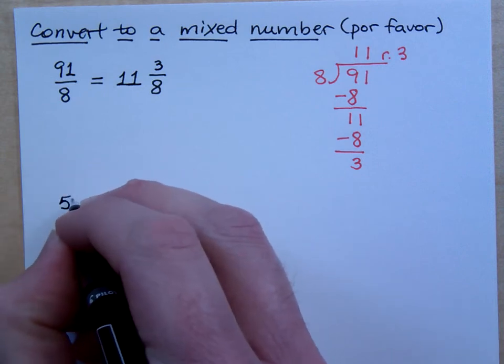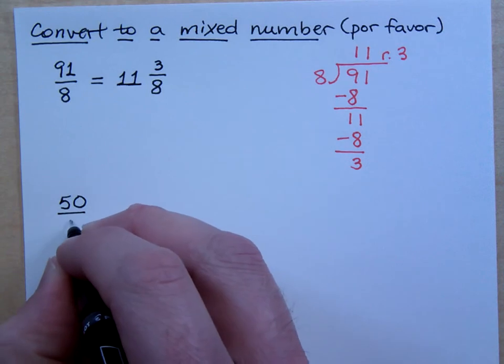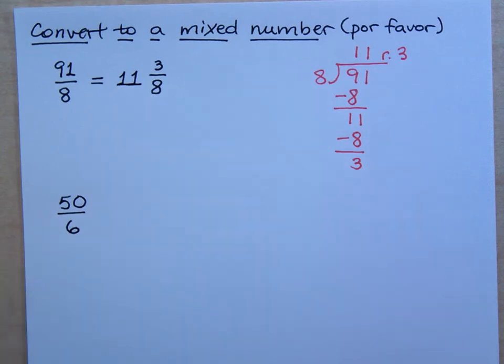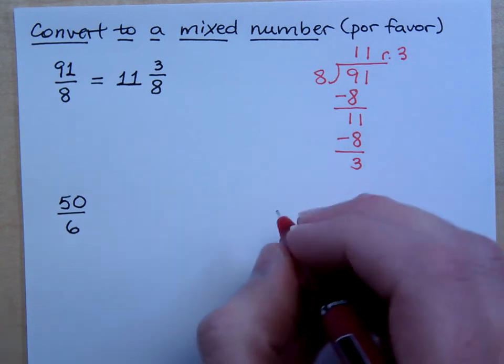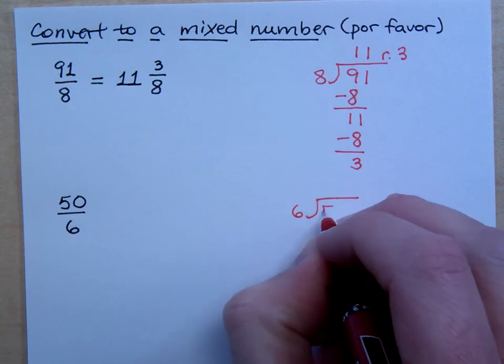So let's do another one. If I have 50 over 6, how do I convert that to a mixed number? When you do long division again?